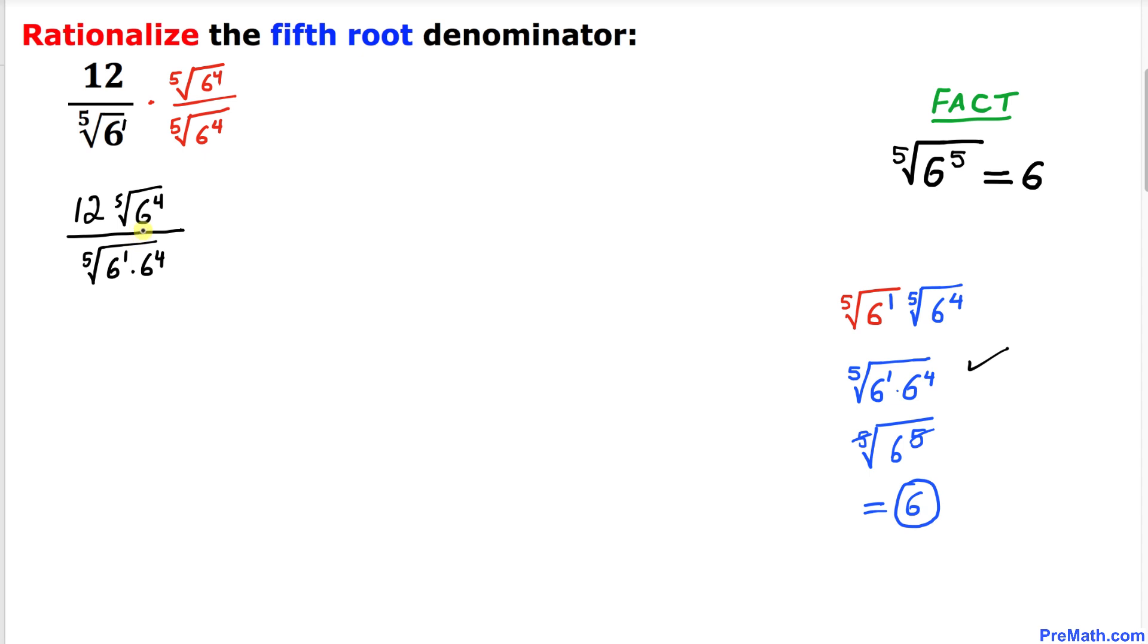Now one more thing to keep in mind: 6 to the power 4 means 1296. So I can write this as 12 times the fifth root of 1296 divided by the fifth root of 6 to the power 5.